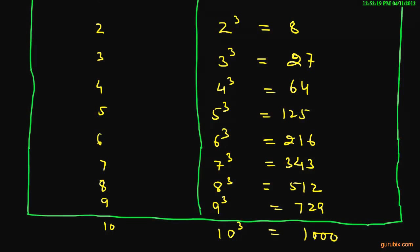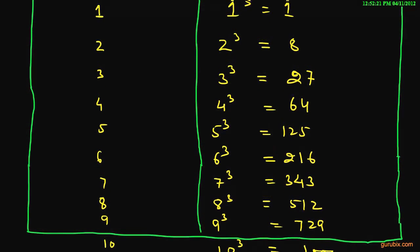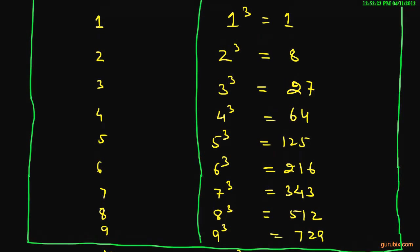From this table you can observe that if the unit digit of a number is 1, 4, 5, or 9, then the unit digit of the cube of that number will be the same as the unit digit. So this is property number 4. Thank you.